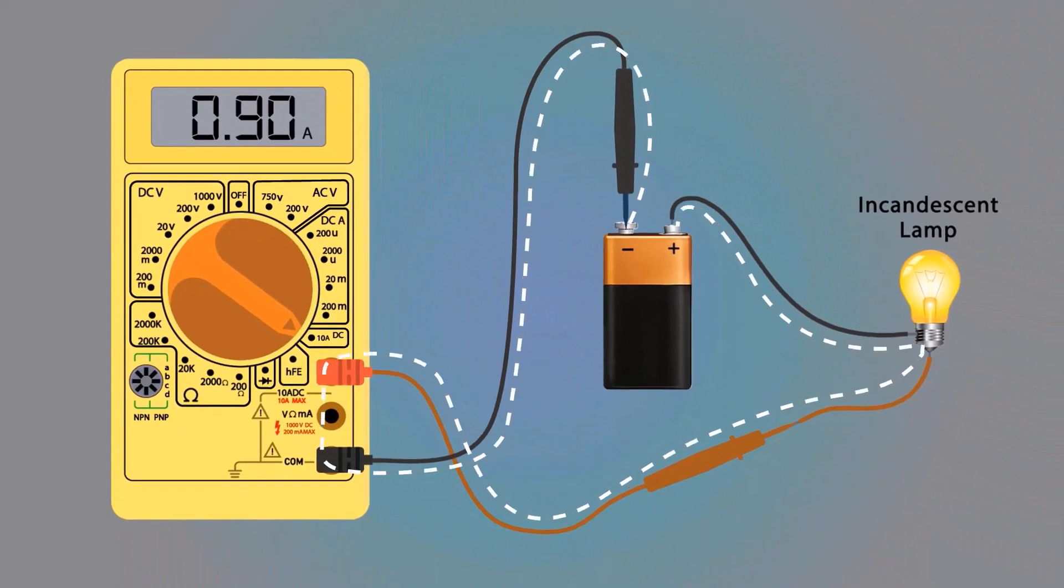Always connect the multimeter in series with the circuit to measure current. This is how we can measure DC current.